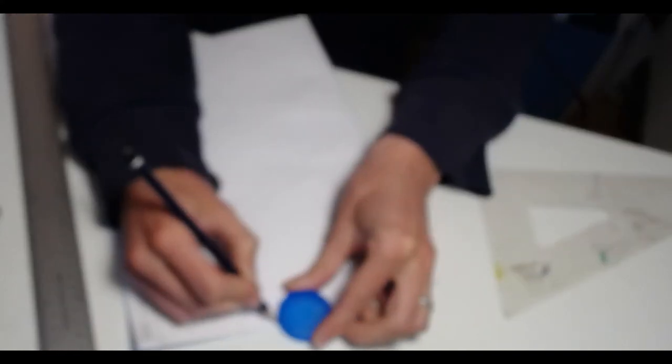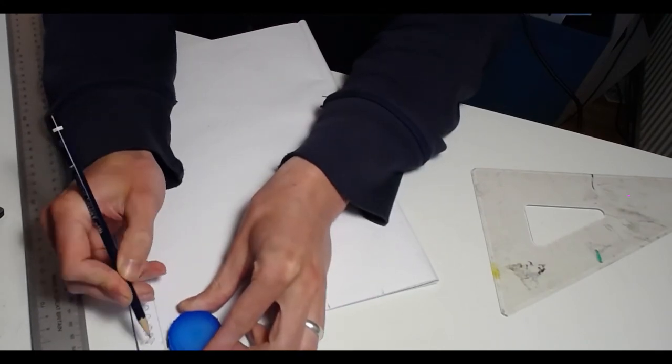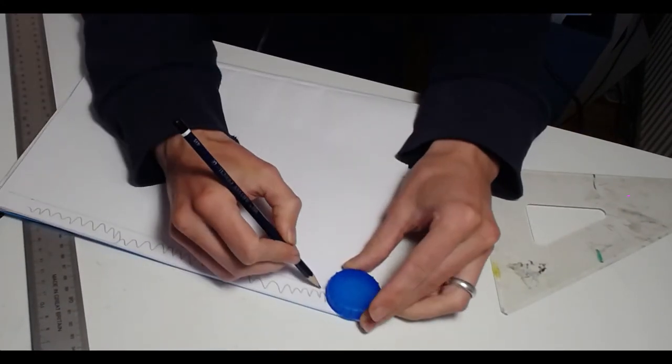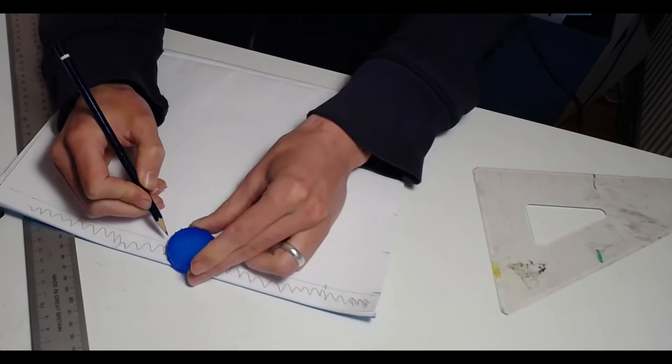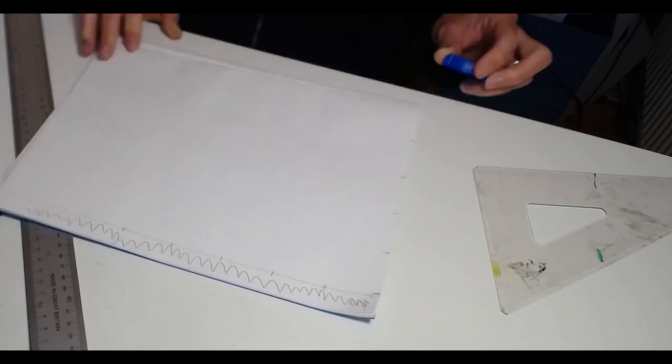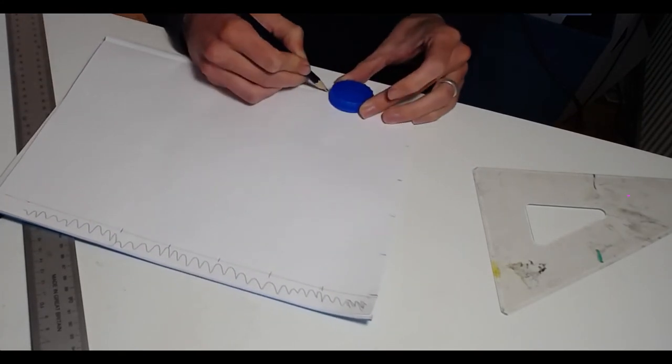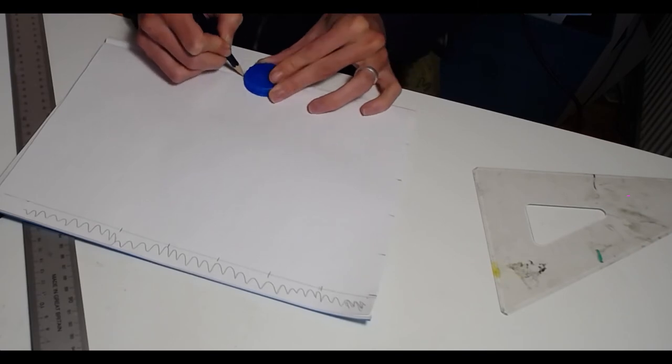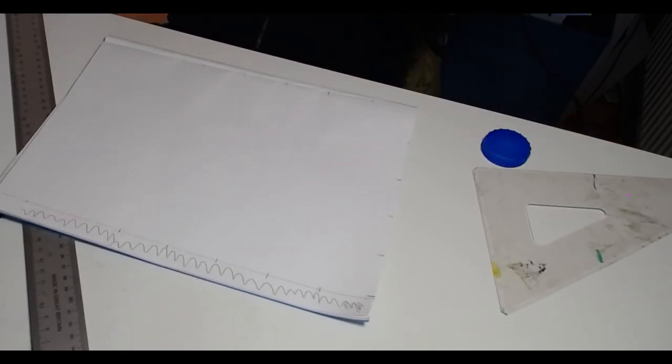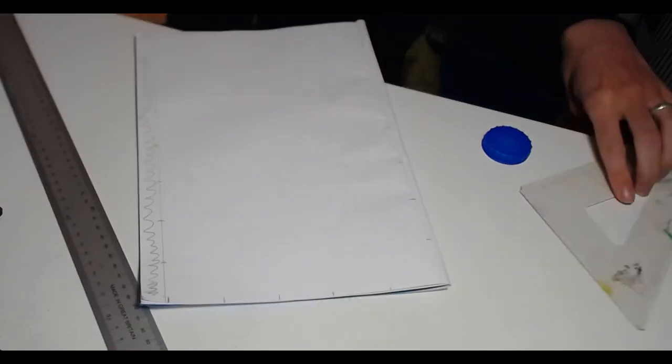So we're now going to measure that out. I'm going to get five squares across and I'm going to do the same down the other way, and then at the bottom at the fifth notch.